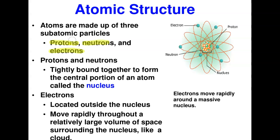An atom is made up of a centrally placed nucleus. The protons and neutrons are both located at the center of the atom — that center is what we call the nucleus. They are tightly bound together to form the central portion of the atom. Around the center, we have fast-moving electrons that circle themselves around this nucleus on the outside.